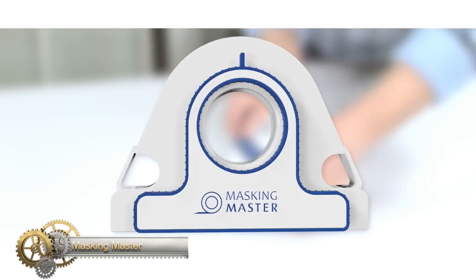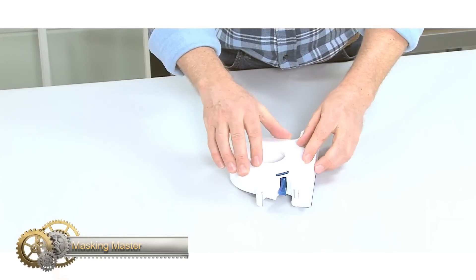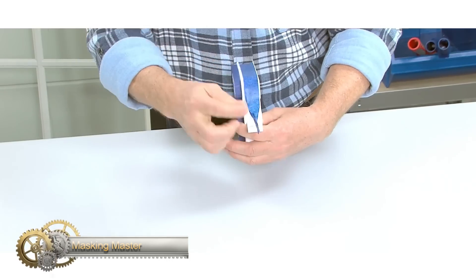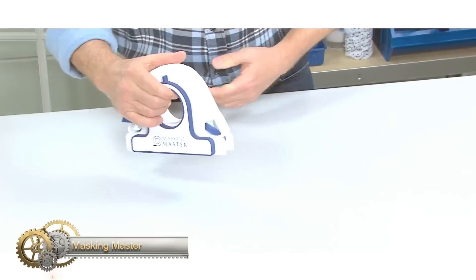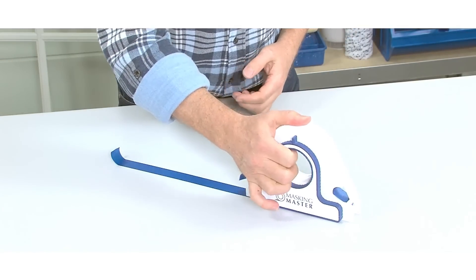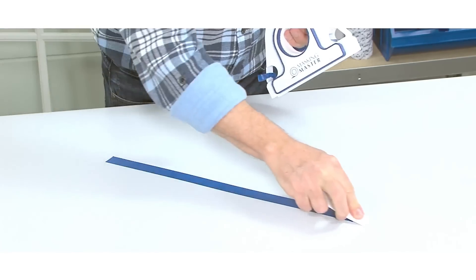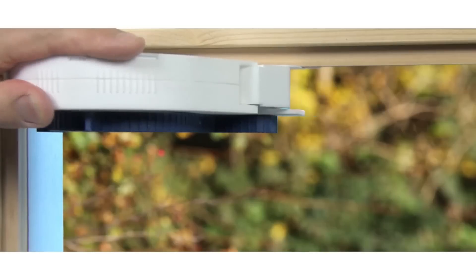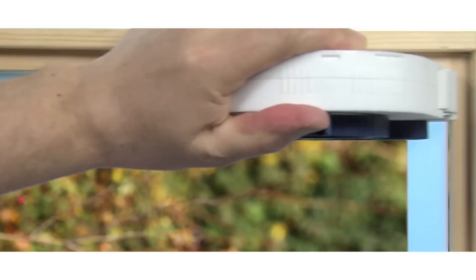The Masking Master is the ultimate all-in-one tool for masking tape application. With just one hand and in a single movement, you can now apply, align, and cut the masking tape with lightning speed. This tool not only makes masking five times faster, but also safer. The Masking Master has been designed with safety in mind.